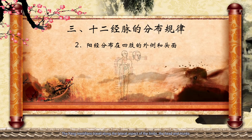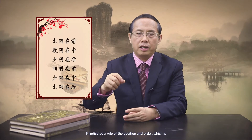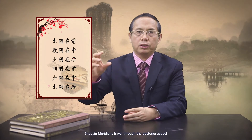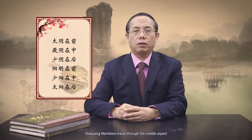The yang meridians travel along the lateral aspect of the limbs, the head and trunk. As the lateral aspect of the limbs, head and face belong to yang, so yang meridians are distributed on these places. It indicates the rule of position and order: the Taiyin meridians travel through the anterior aspect, Jueyin meridians through the middle aspect, Shaoyin meridians through the posterior aspect. Yangming meridians travel through the anterior aspect, Shaoyang meridians through the middle aspect.